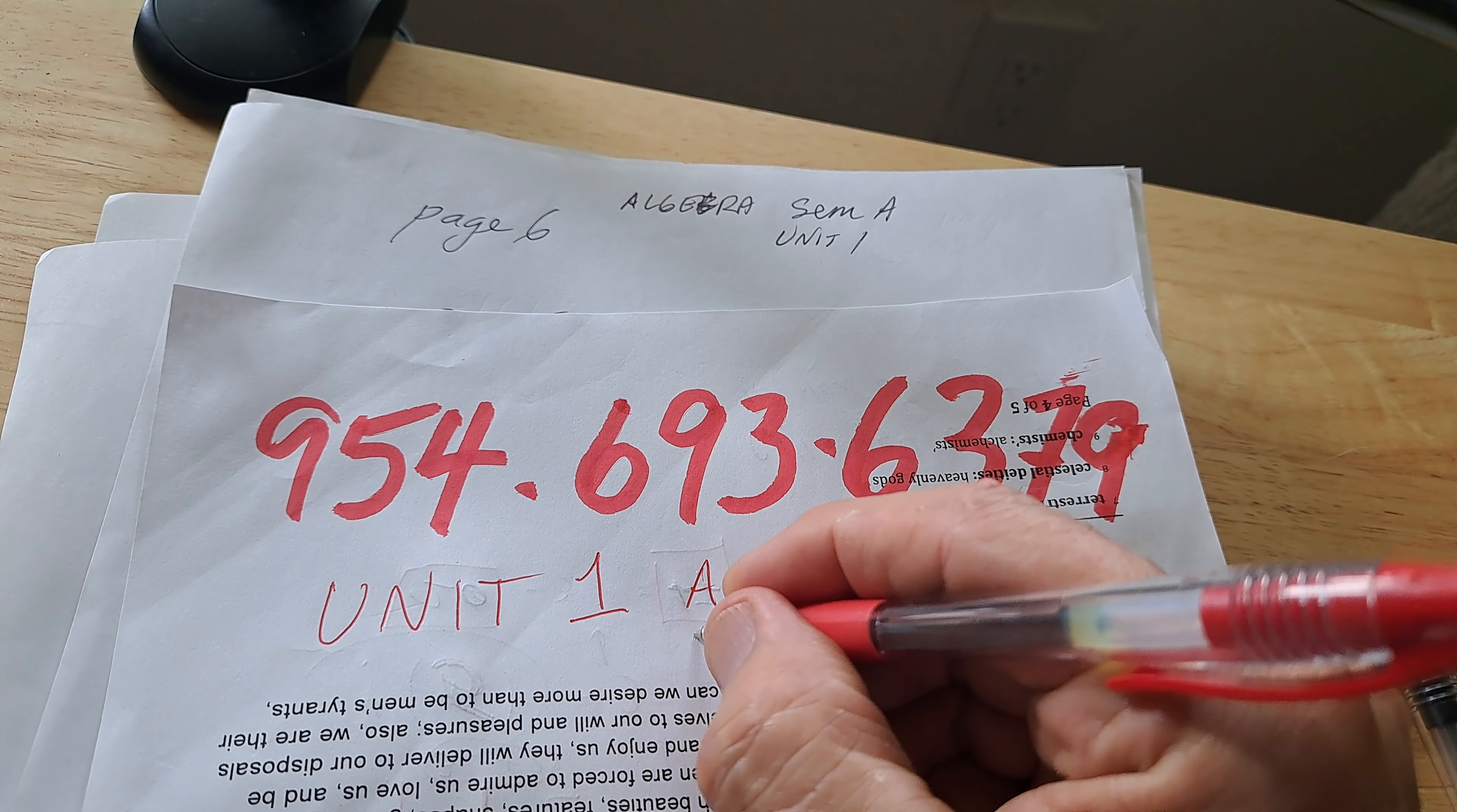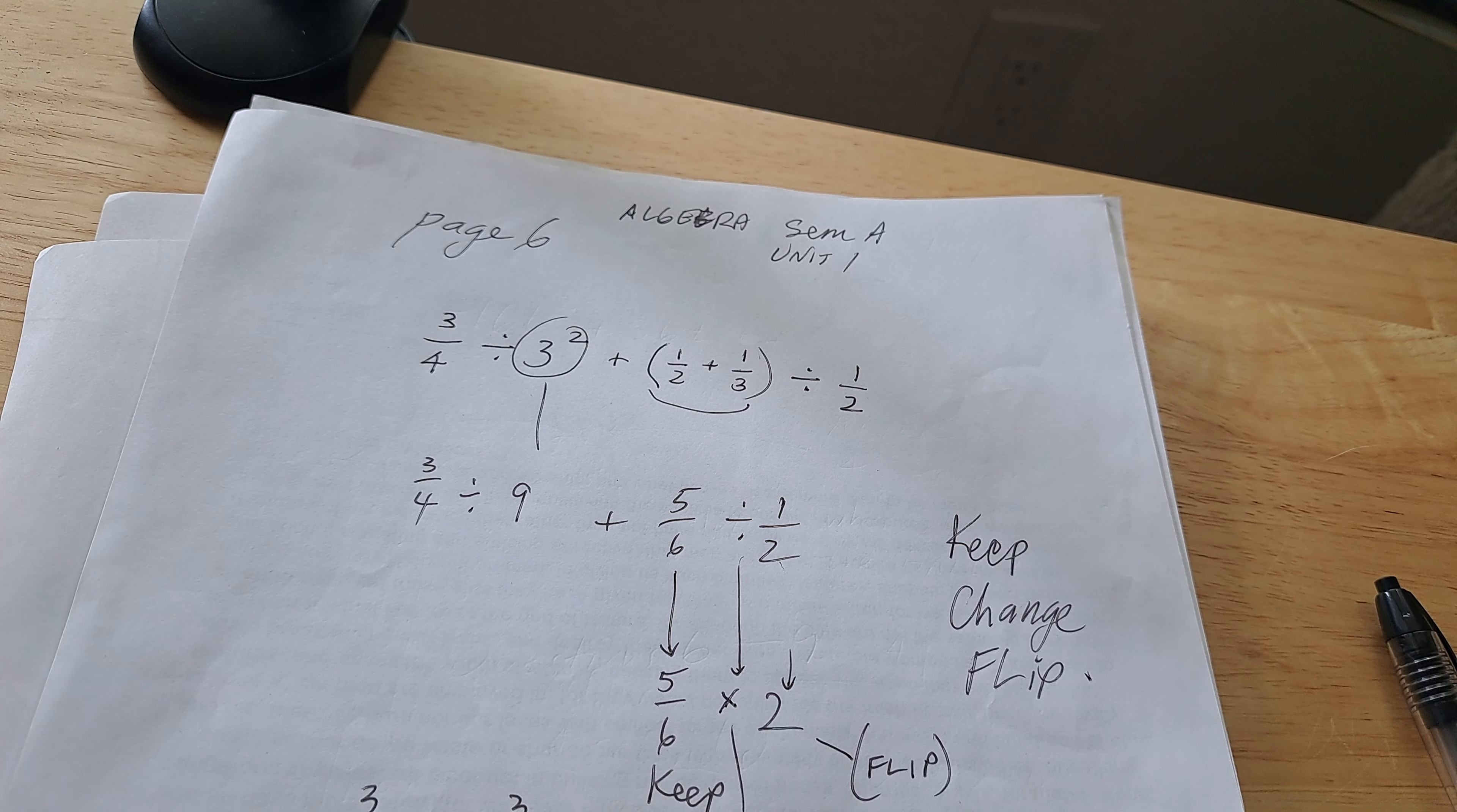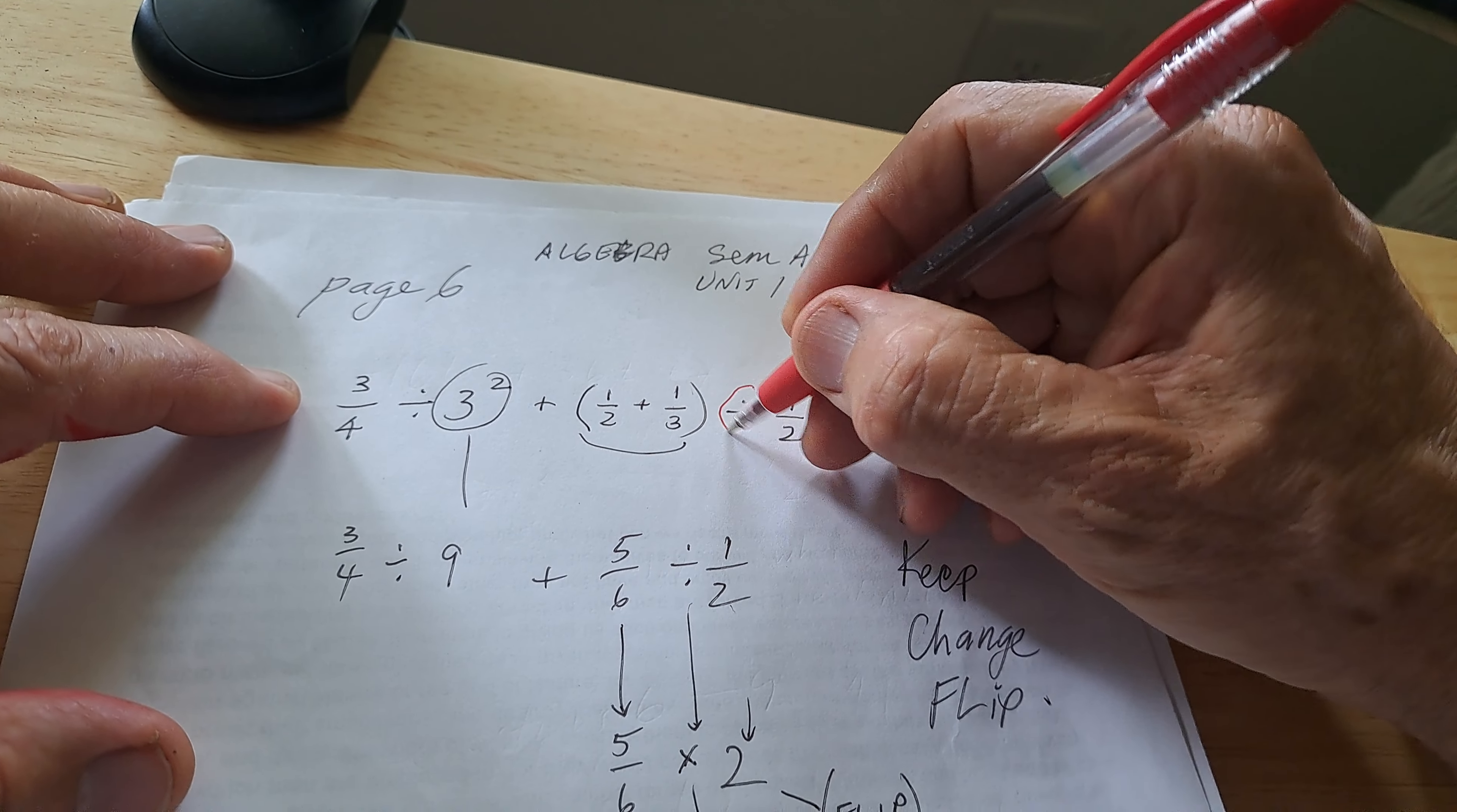Hi. This is Unit 1, Part 2. I think we're up to Part 2 now. This is going to be questions 6 through 9. Let's look and see what we're doing here. First of all, we have page 6.